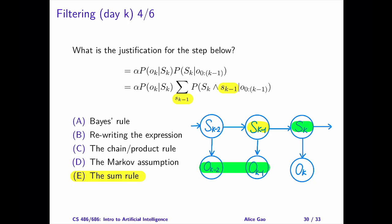The correct answer is E, the sum rule. We use the sum rule in reverse to introduce S sub k-1 into the second term. We can see the reason for doing this from the Bayesian network. The second term contains S sub k and O sub 0 to k-1. These two parts are not directly connected. Introducing S sub k-1 connects the two parts in the network.